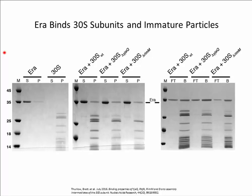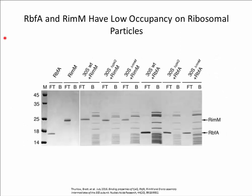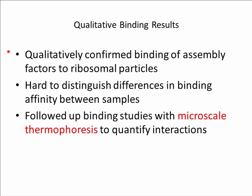We next performed pelleting and filtration assays to assess the binding of ERA with mature 30S subunits and immature 30S particles. The pelleting assay results show that ERA is capable of binding to all three particles — both the mature 30S subunit and the immature particles. The filtration assay results similarly showed that ERA is capable of interacting with both mature and immature particles. Despite being able to confirm that binding was happening, we could not determine any differences in the various binding affinities. When we performed filtration assays to assess binding of either RIM-M or RBFA, we essentially did not detect any binding at all.